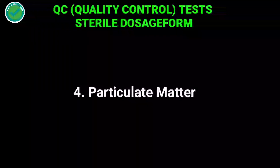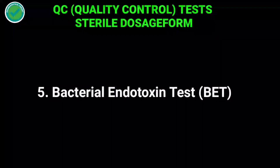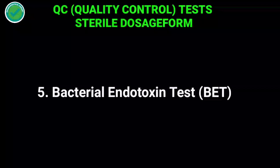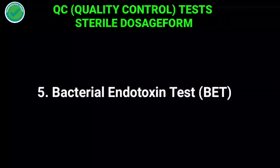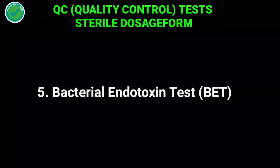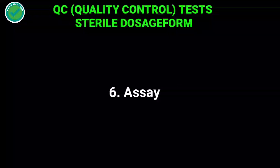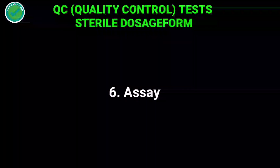Particulate matter test, as the name indicates, describes about the particulate matter present in the formulation — there is a specific limit for each formulation. The bacterial endotoxin test, or BET test, ensures the sterility of the product. The assay describes about the quantity of drug present in the formulation.